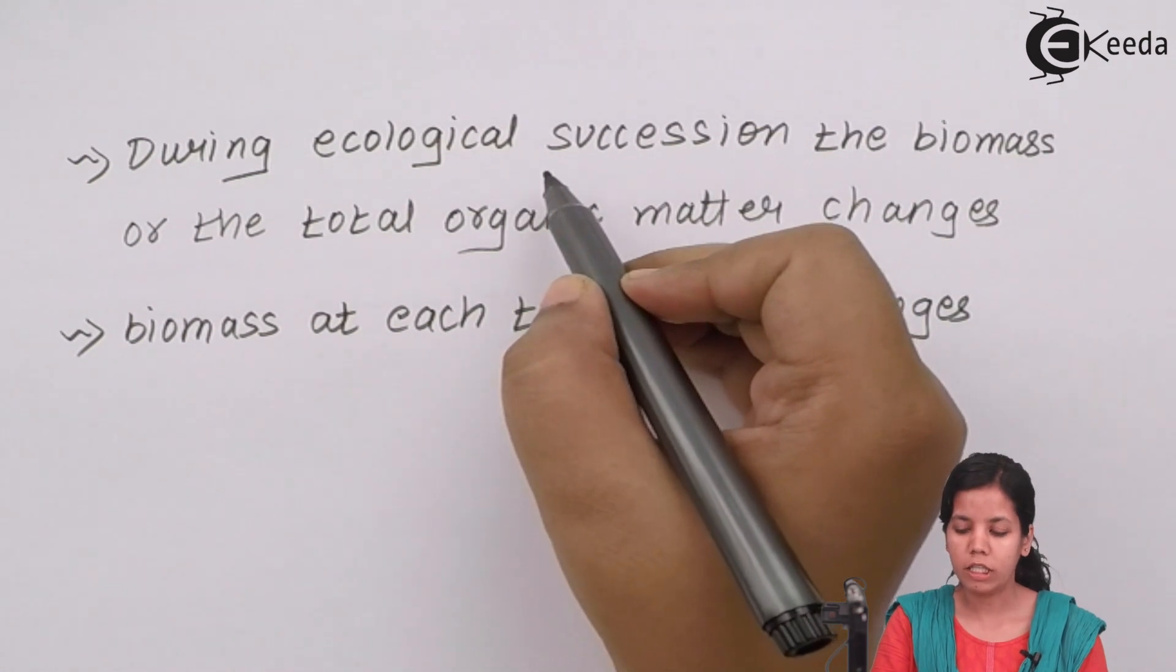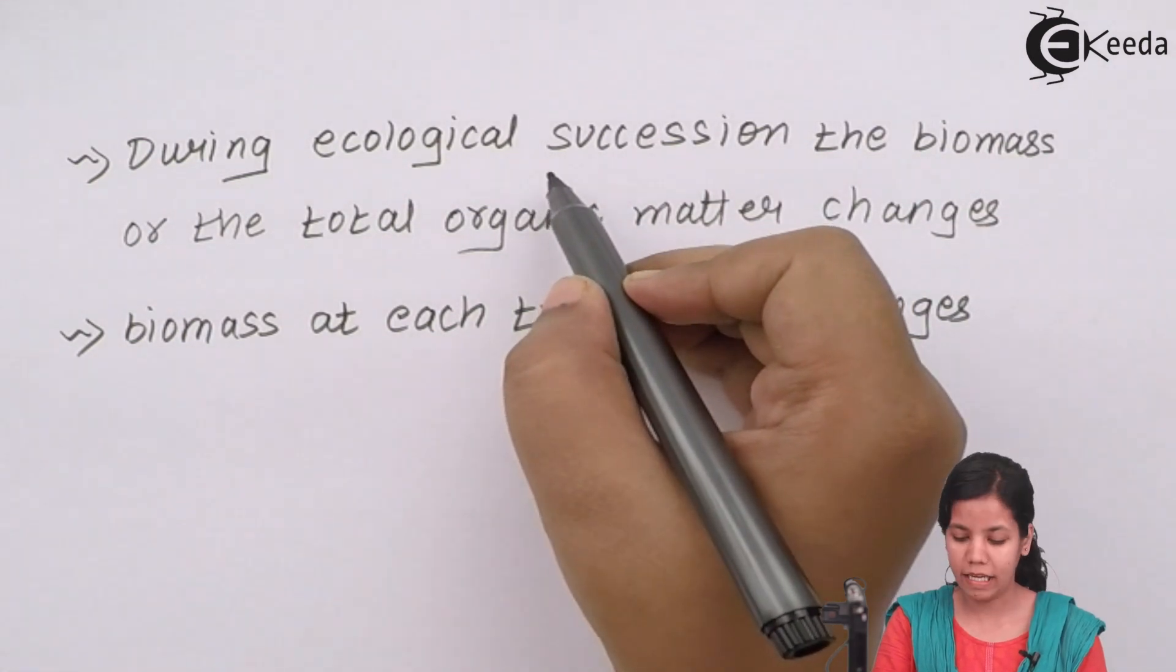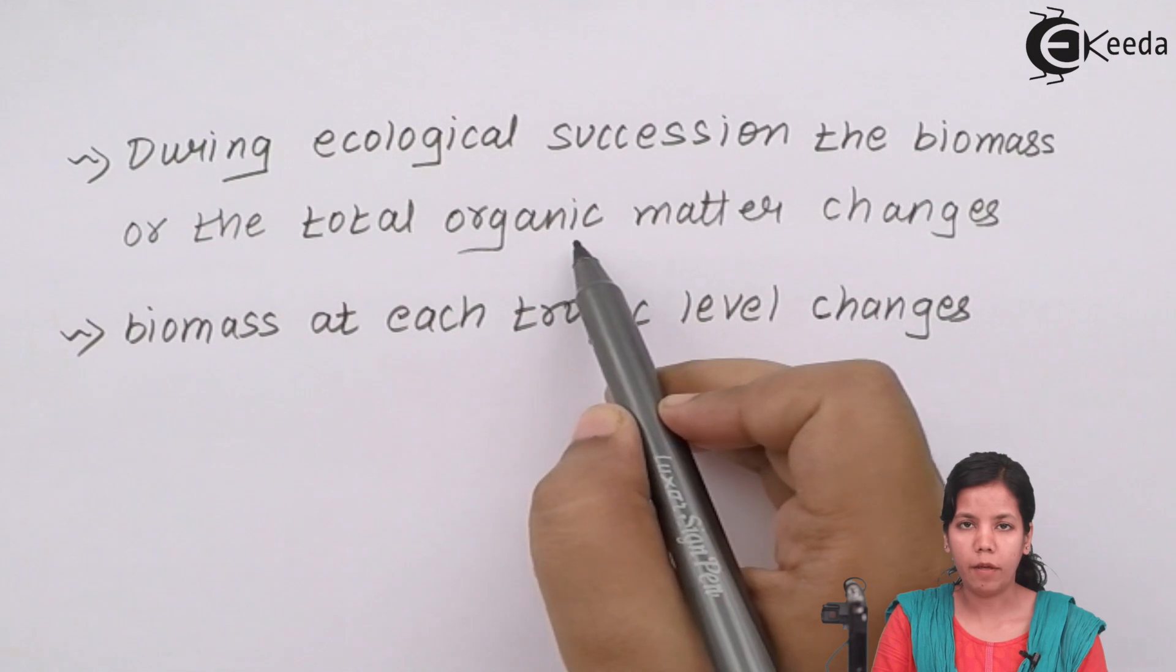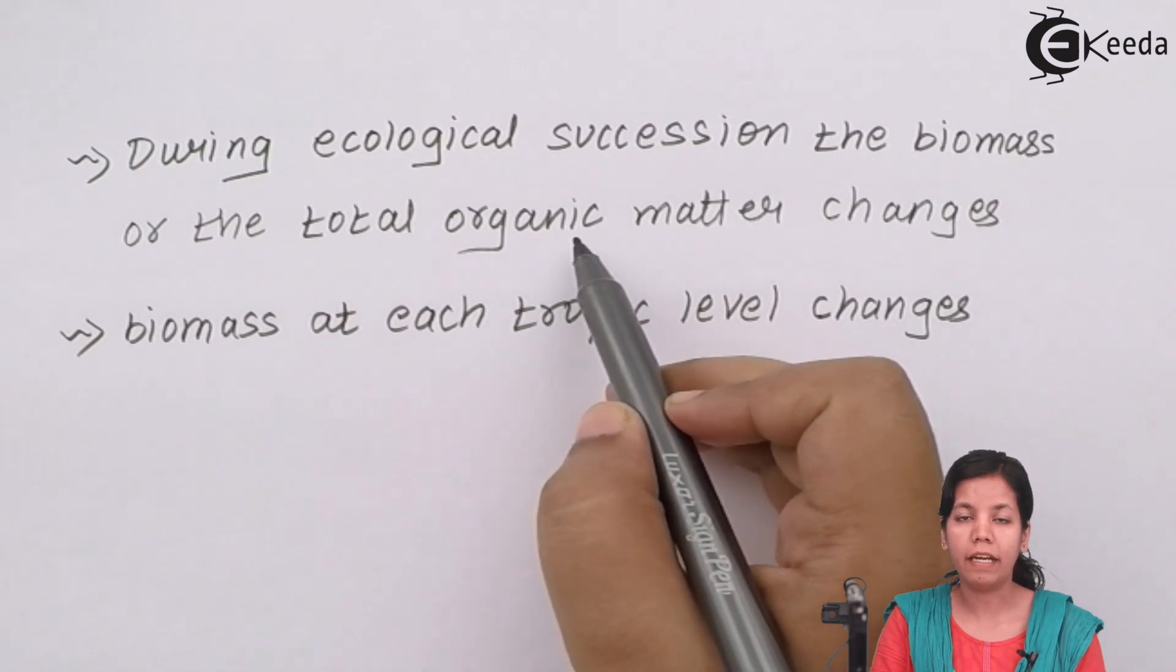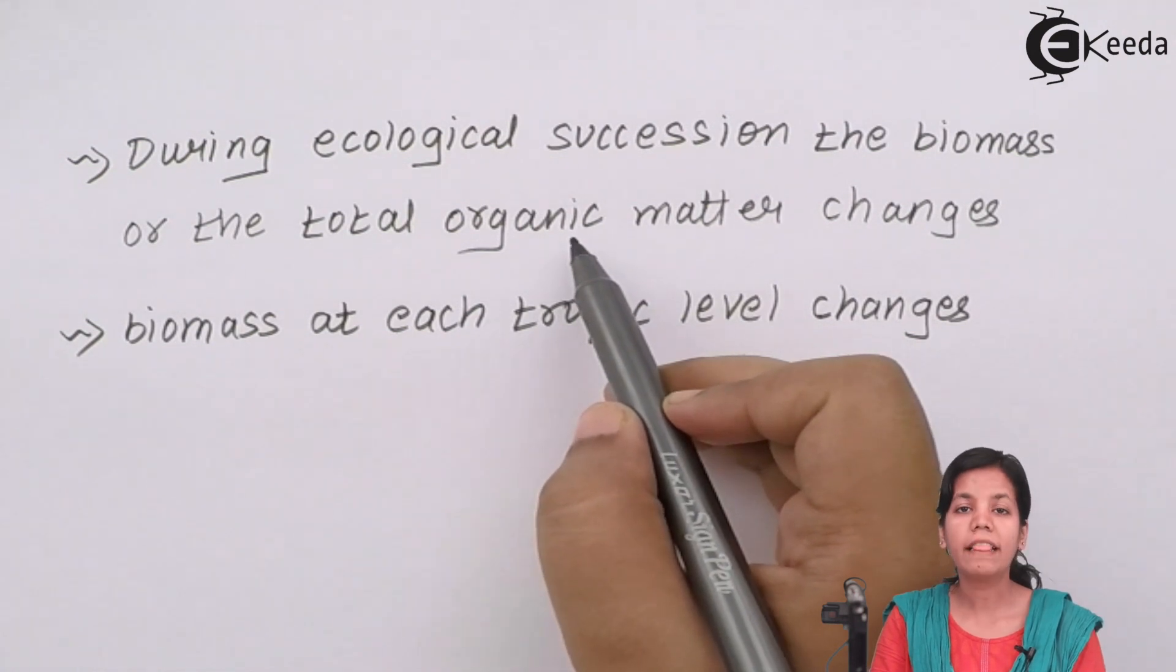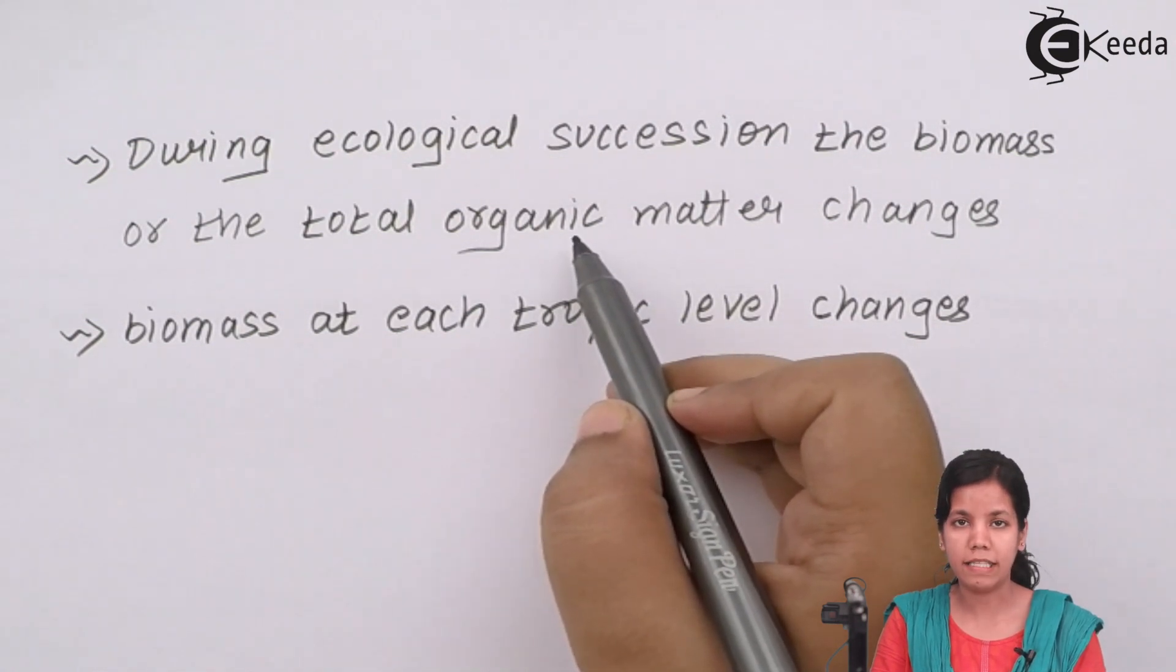During ecological succession, the striking feature that happens is that the total organic matter, when I say total organic matter, it means the total amount of carbon, hydrogen, oxygen, nitrogen that are pleasant inside plants, animals, species changes.